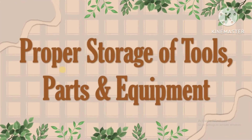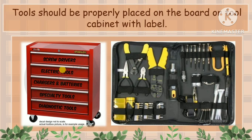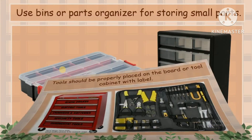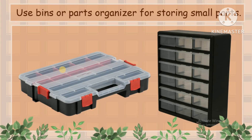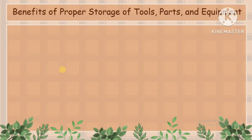7. Proper storage of tools, parts, and equipment. 8. Computer parts and cables should be properly stored and labeled. Tools should be properly placed on the board or tool cabinet with a label. 9. Use bins or parts organizers for storing small parts. Require individuals to be responsible for the maintenance of tools and parts. The following are the benefits of proper storage of tools, parts, and equipment.